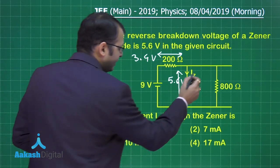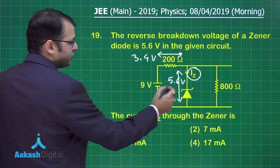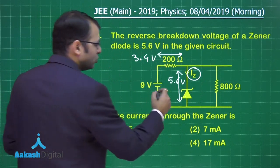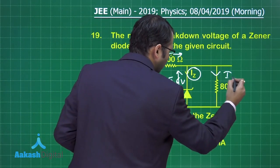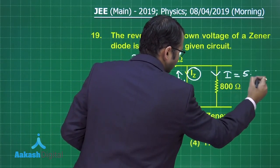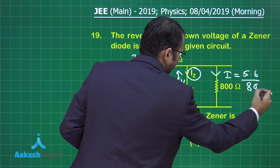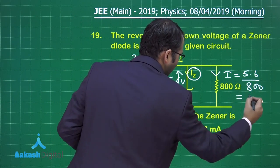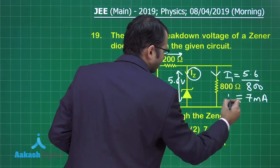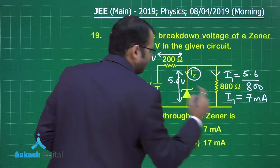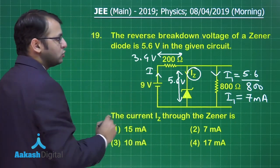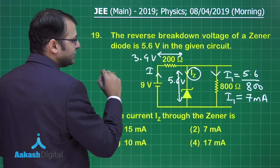We have to find the current Iz. Since the resistor and Zener diode are in parallel, the current through the 800-ohm resistor, i1, would be simply 5.6 divided by 800, which equals 7 milliamperes.